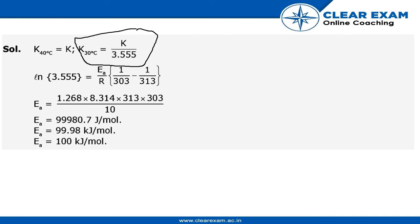So we'll solve this. Ea is equal to 1.268 into 8.314 into 313 into 303 upon 10. So Ea is equal to 99,980.7 joule per mole.